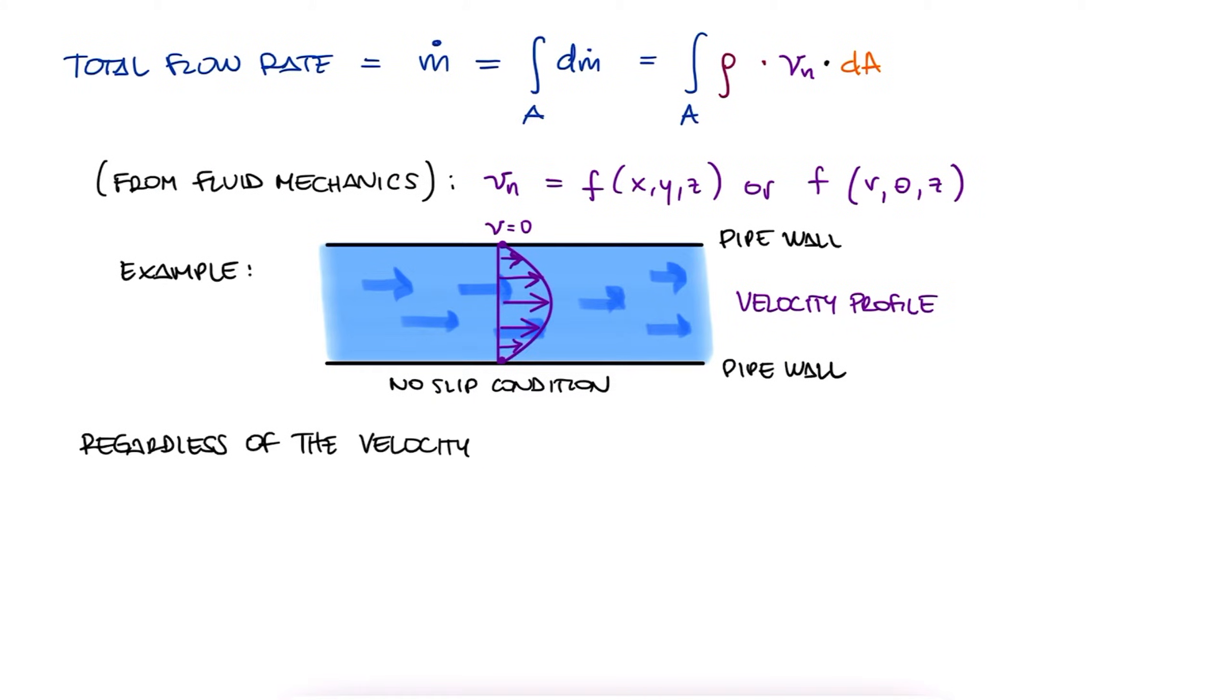Whatever the duct shape is, meaning whatever the velocity profile looks like, the average velocity, V sub average, is defined as 1 over the area times the integral over that area of V sub n dA, which is the basic definition of the average of any variable.